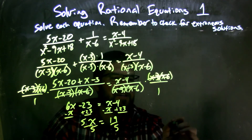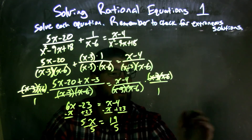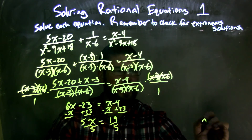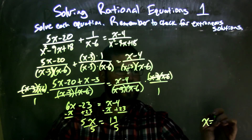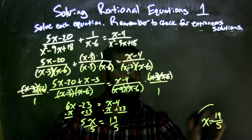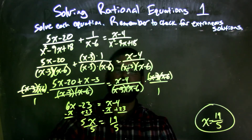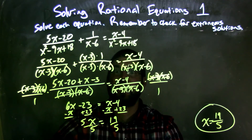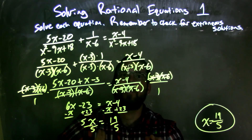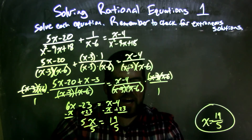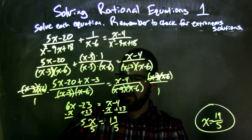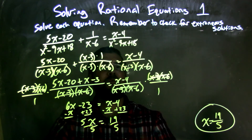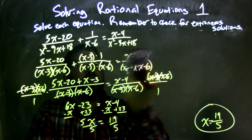We're left with a fraction, so x equals 19 over 5. Now I need to check my work, and since I don't have space here, I'm going to erase and work over there.